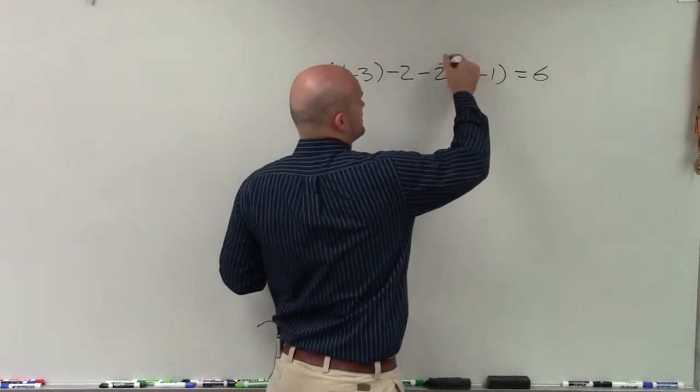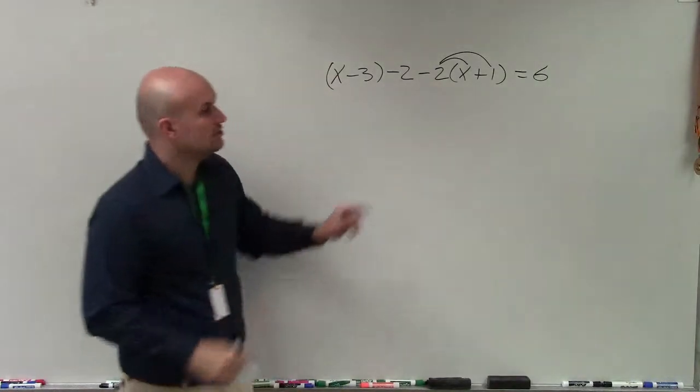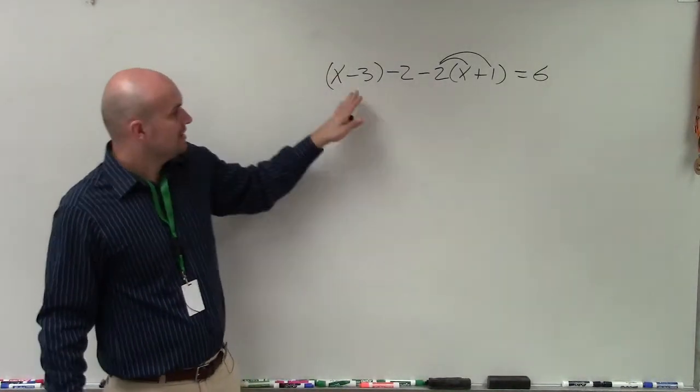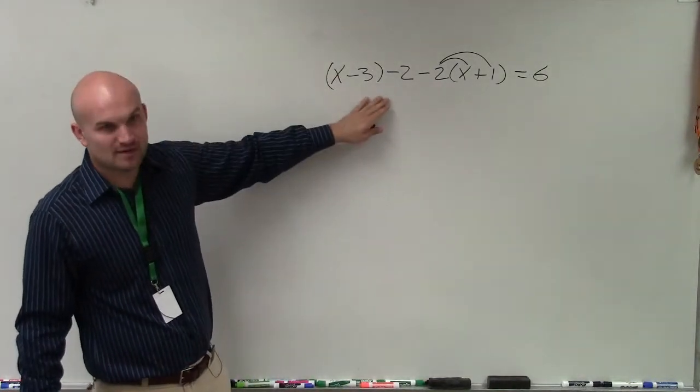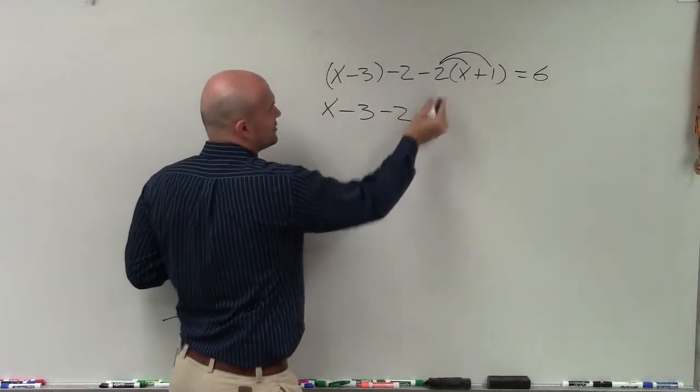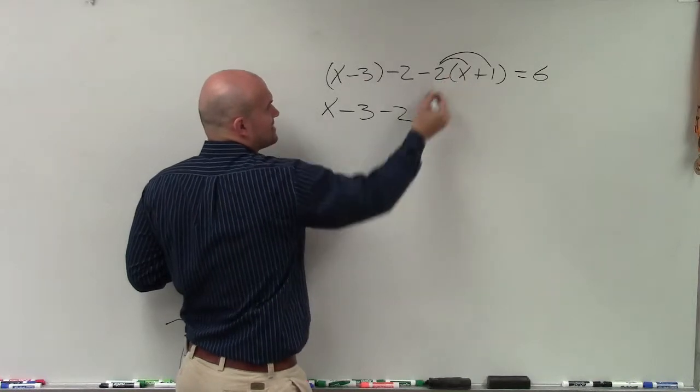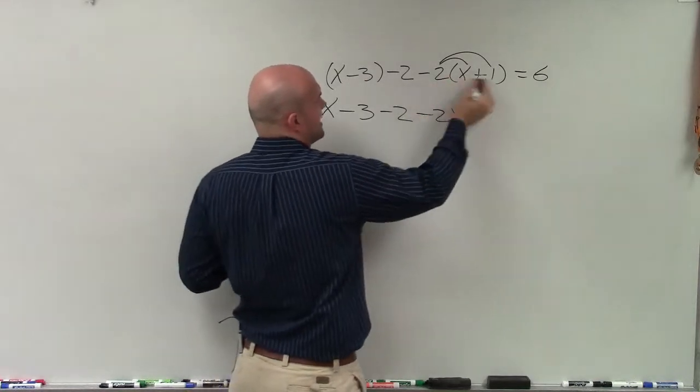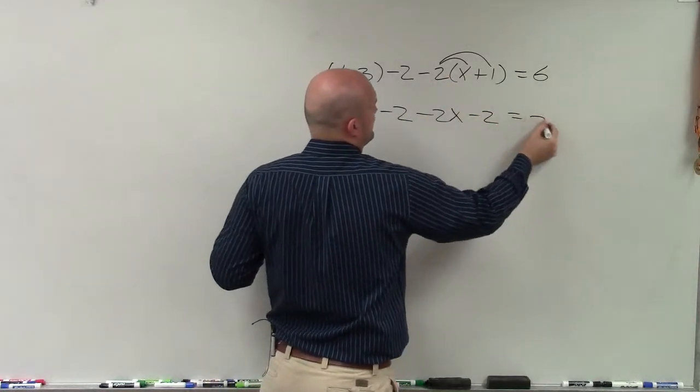So then, the next thing I need to do is distribute using my distributive property. Here, I really actually don't need these parentheses because there's nothing being applied to them. So it's x minus 3 minus 2. Negative 2 times x is negative 2x. Negative 2 times 1 is negative 2 equals 6.